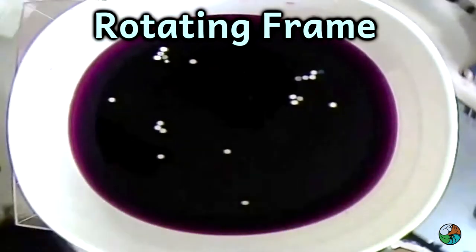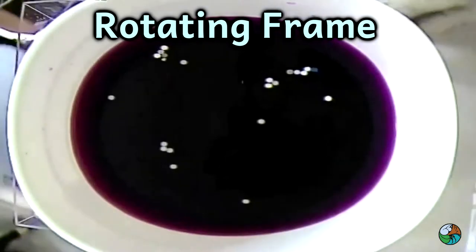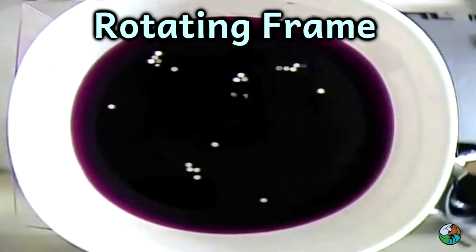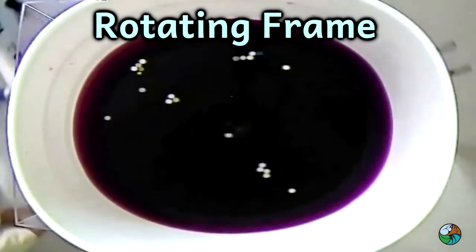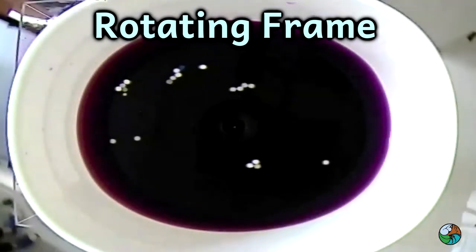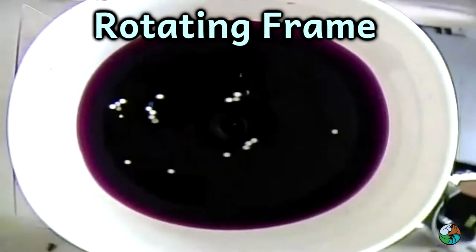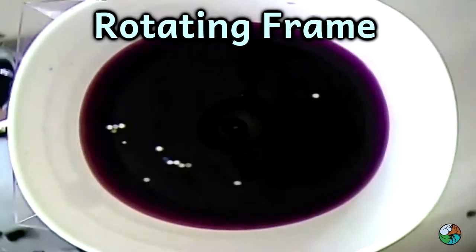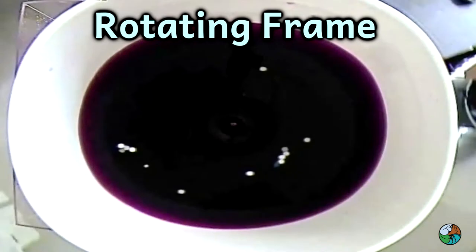We can observe that the paper dots swirl around many more times before exiting from the hole at the center. Paper dots far away from the center move much more slowly than the paper dots near the center.